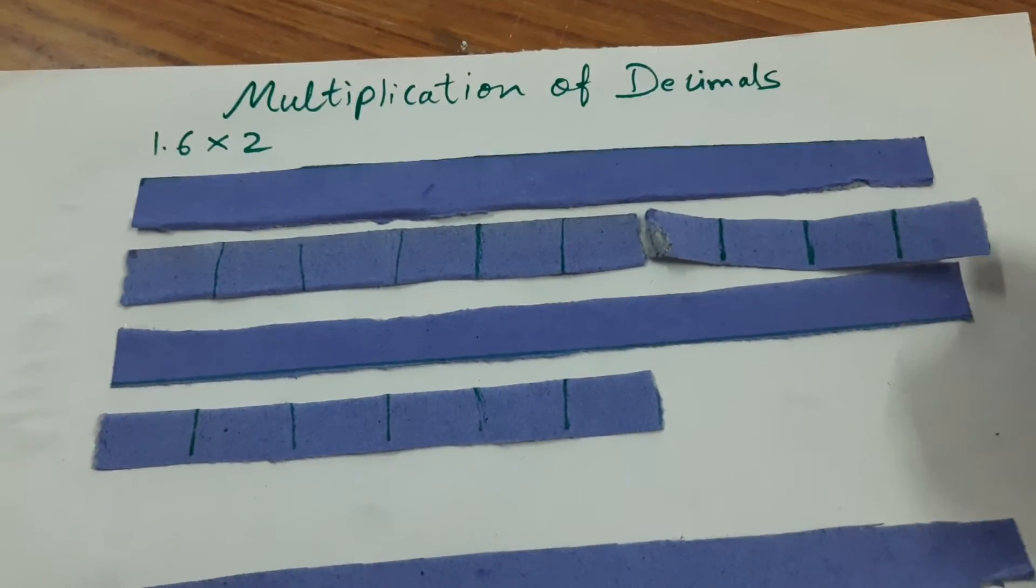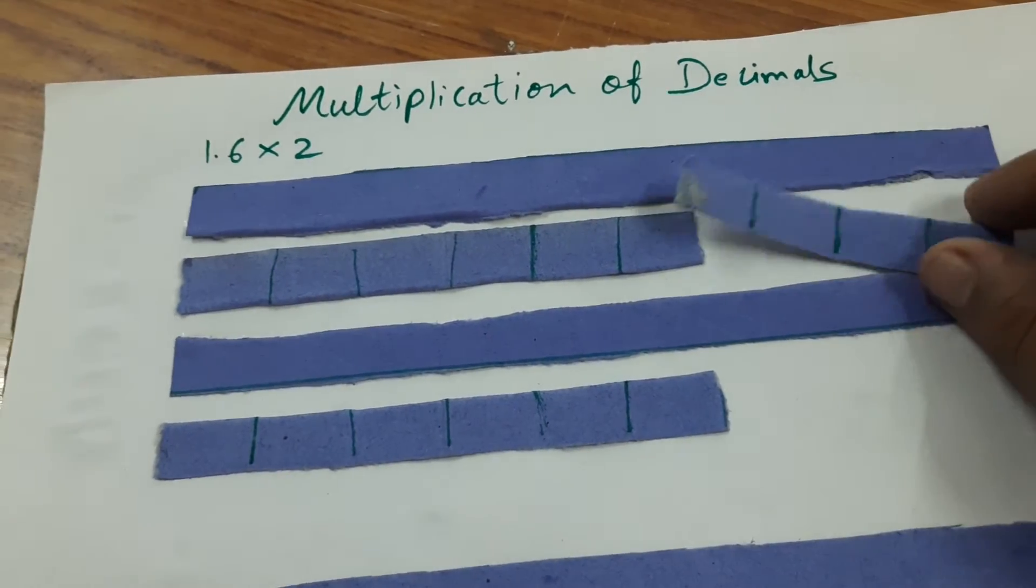As we can see here, if we can join here 0.4, so 6 and 4 become 10.